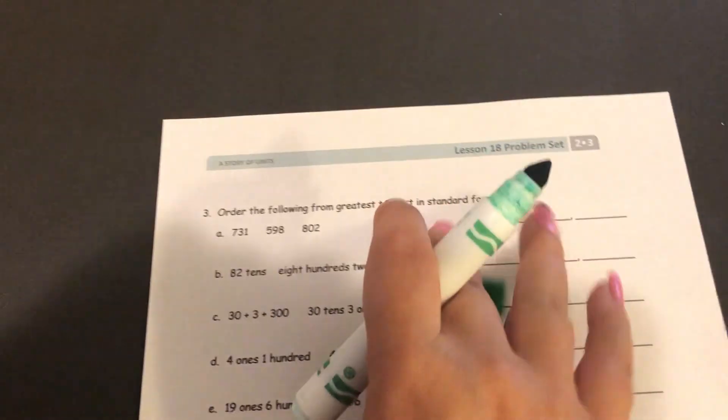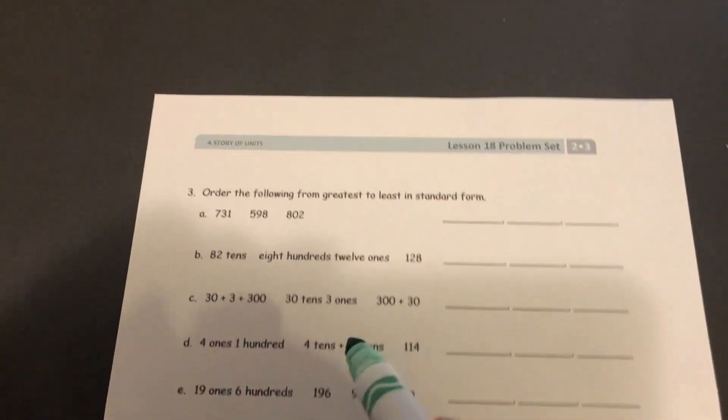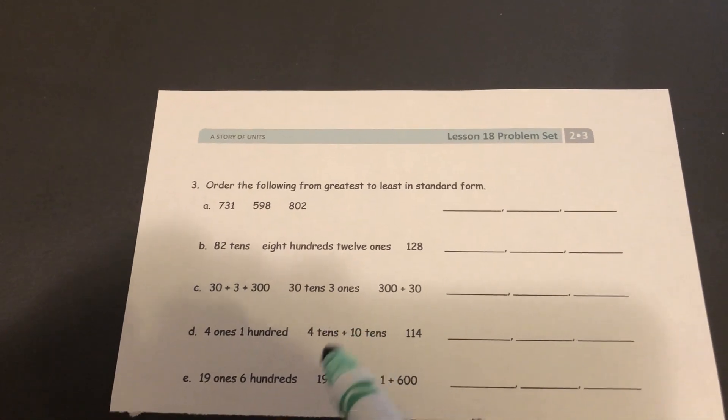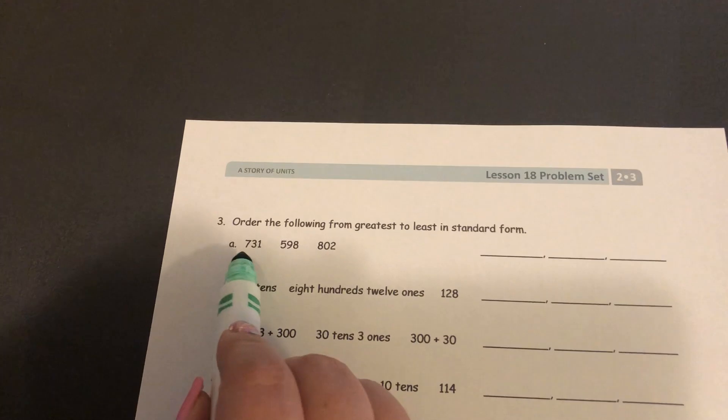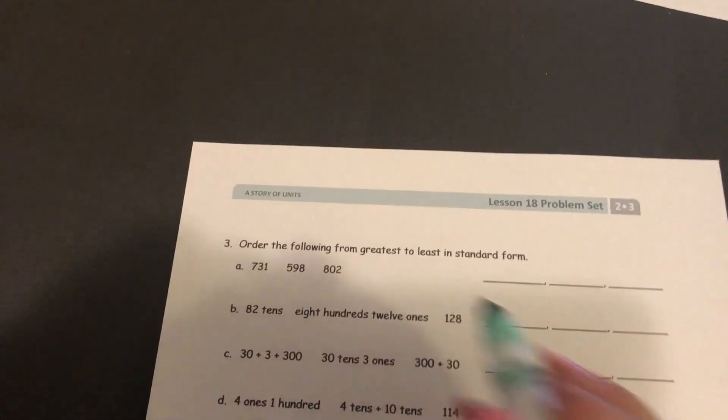For the last section, it wants you to order them from greatest to least. So if they're not in the correct form, in the standard form already, you'll have to do that first. But if I'm looking at these, which are already in standard form, first, I look at the hundreds place.